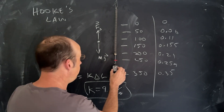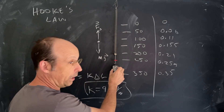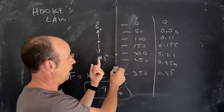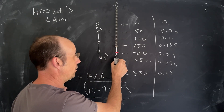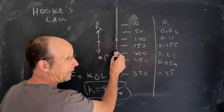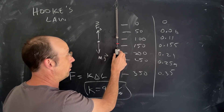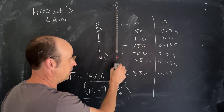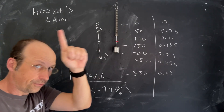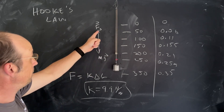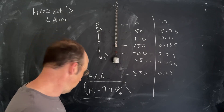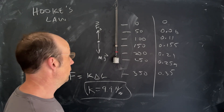Now suppose I pull the mass down. The upward spring force becomes greater than the weight, and if I let go it accelerates upward. It speeds up until it reaches equilibrium, but now it's moving upward, so it continues past equilibrium. Above equilibrium, gravity is greater than the spring force, so it slows down, stops, and comes back down — it oscillates. The force is non-constant; it depends on position, which changes velocity, which changes position — that's what makes it difficult to model.